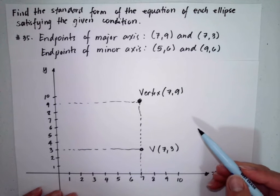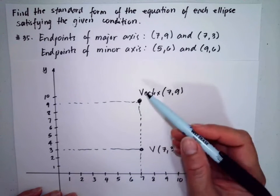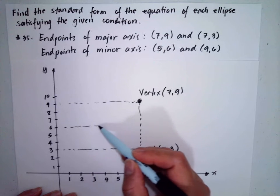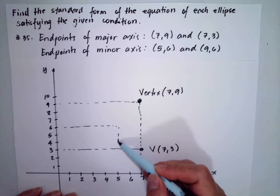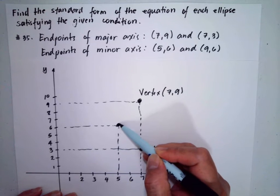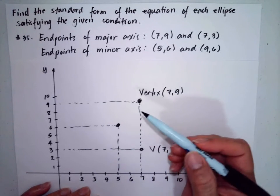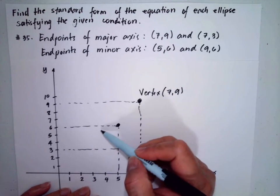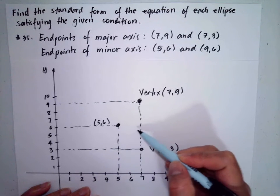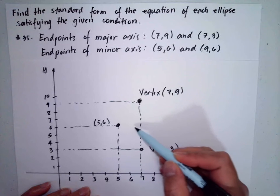Then, the minor axis endpoint is (5, 6) — so x is 5 and y is 6. This represents the b value. And the other endpoint of the minor axis is (9, 6).